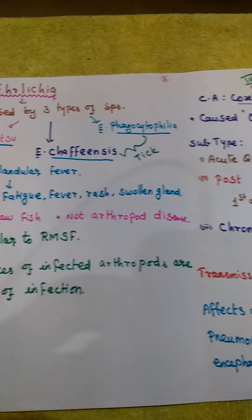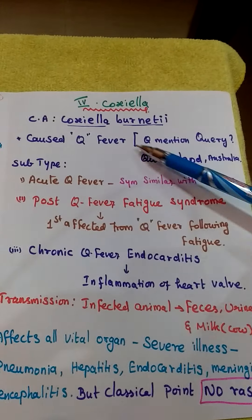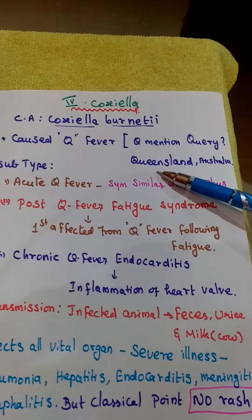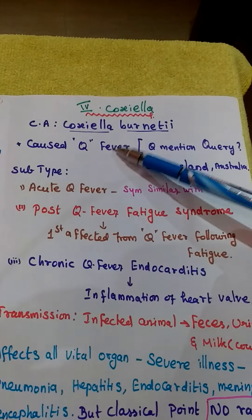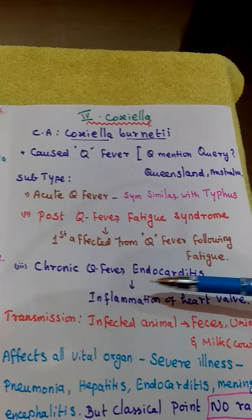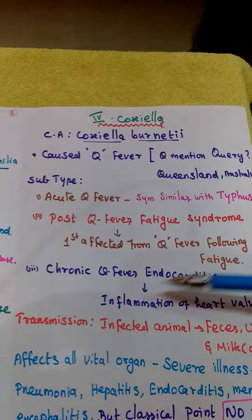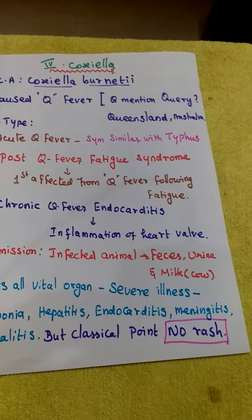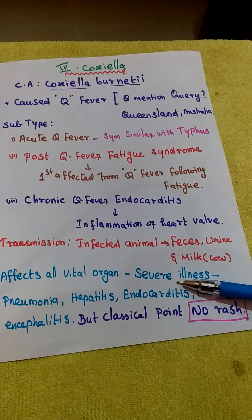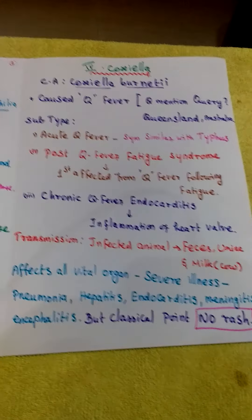The last genus is Coxiella. The causing agent is Coxiella burnetii, which causes Q fever. Q means 'query' — previously the causing agent was unknown. Also, the first case was reported in Queensland, Australia, hence the name Q. It has three subtypes: acute Q fever (symptoms similar to typhus), post-Q fever fatigue syndrome (fever with fatigue), and chronic Q fever / Q fever endocarditis (affects heart valves). Transmission is via infected animal fecal material, urine, or milk. It can affect major organs, causing pneumonia, hepatitis, endocarditis, meningitis, and encephalitis. One classical point: no rashes.